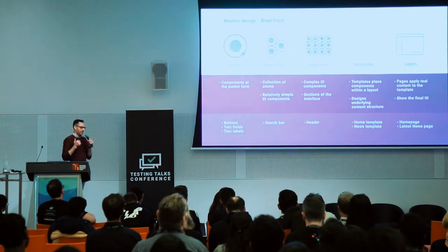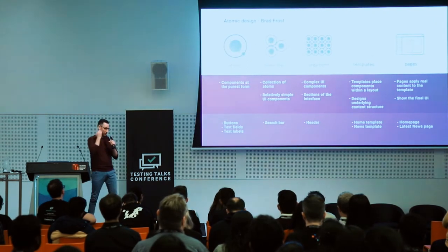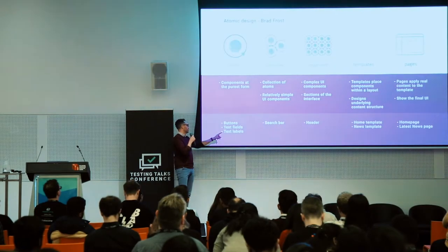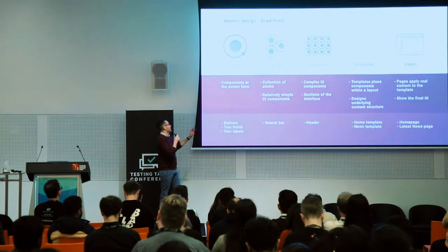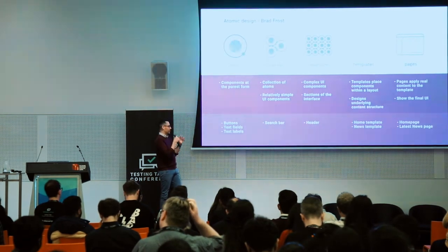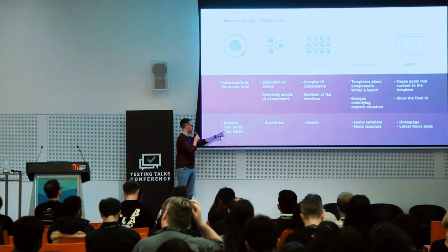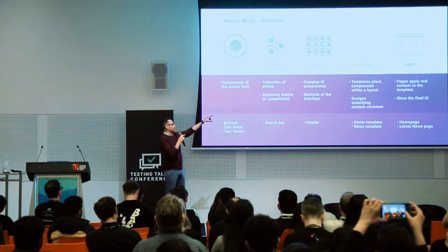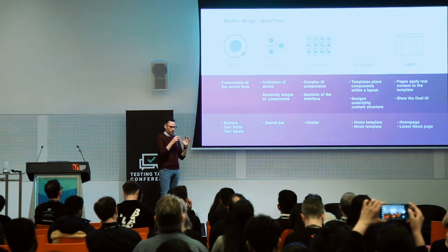One of the thought leaders in design systems is Brad Frost. The way he thinks about reusable components is in atoms, molecules and organisms. Atoms are the smallest components — buttons, text fields and text labels. Those atoms join together to become molecules. For example, a button, a text field and a text label make a search bar. And then we've got more complex organisms, which are complex UI components like a header or a footer.